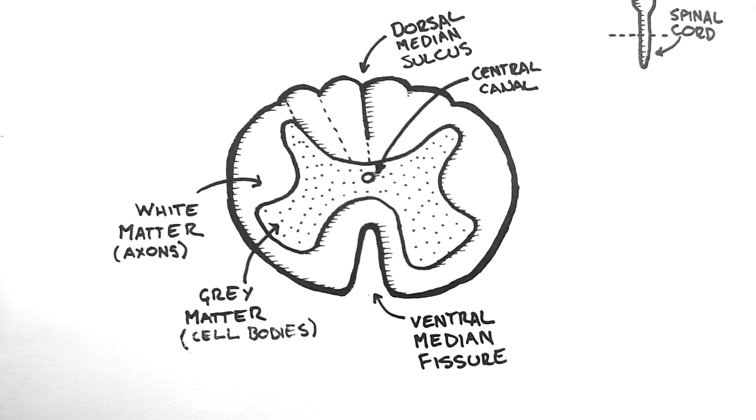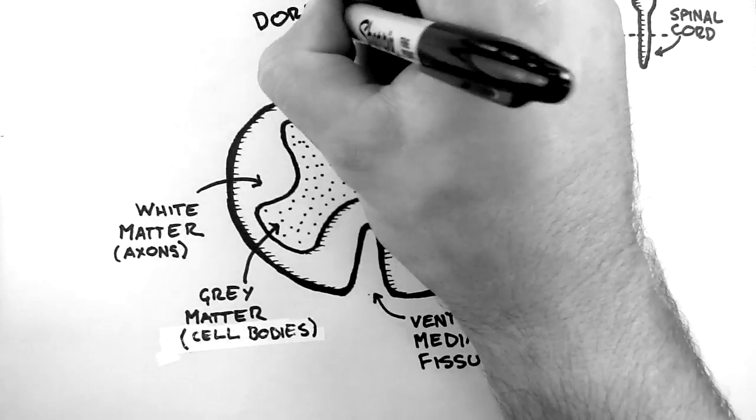So the first two fasciculi that we will look at travel in these areas up the back of the spinal cord. And these are known as the gracile and cuneate fasciculi. Collectively, they are known as the dorsal column.